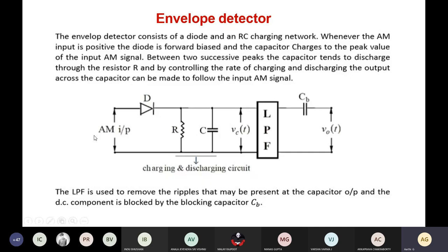The diode is going to rectify the input. The AM input has both positive and negative halves, and the diode is going to conduct only the positive half — that is, it is going to act as a rectifier. The diode will conduct only for the positive half of the AM input. This positive half is given as input to the RC network, and the RC provides the time constant.